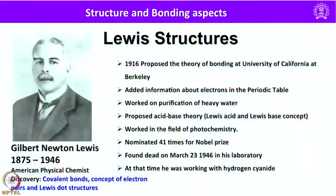Let me begin with Lewis structures. We are all familiar with Lewis structures. Lewis structure was proposed by Gilbert Newton Lewis in 1916 from the University of California at Berkeley. Besides working on structural aspects related to main group elements, he also added a lot of information about electrons in the periodic table, worked on the purification of heavy water, proposed the Lewis acid-base concept, and worked in the field of photochemistry. He was nominated 41 times for the Nobel Prize and unfortunately was never awarded it.